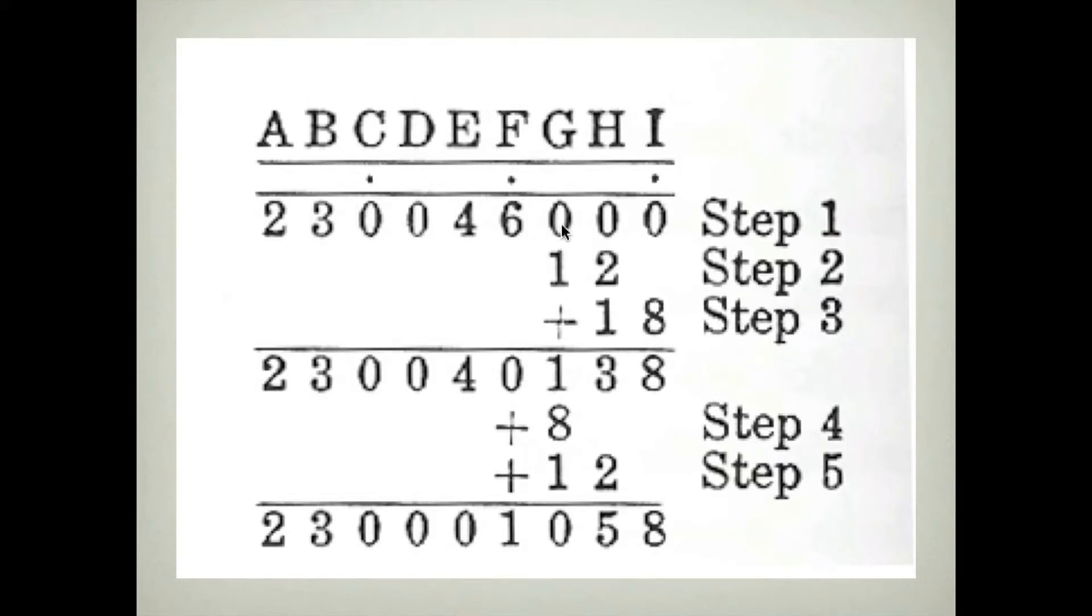In the first multiplication, we multiply the 2 and the 6 to get 12. I'll refer to this as a subproduct. Then we multiply the 3 and the 6 and get 18. This is a subproduct. We add, using Soroban beads, the 12 and the 18 to get the first partial product.